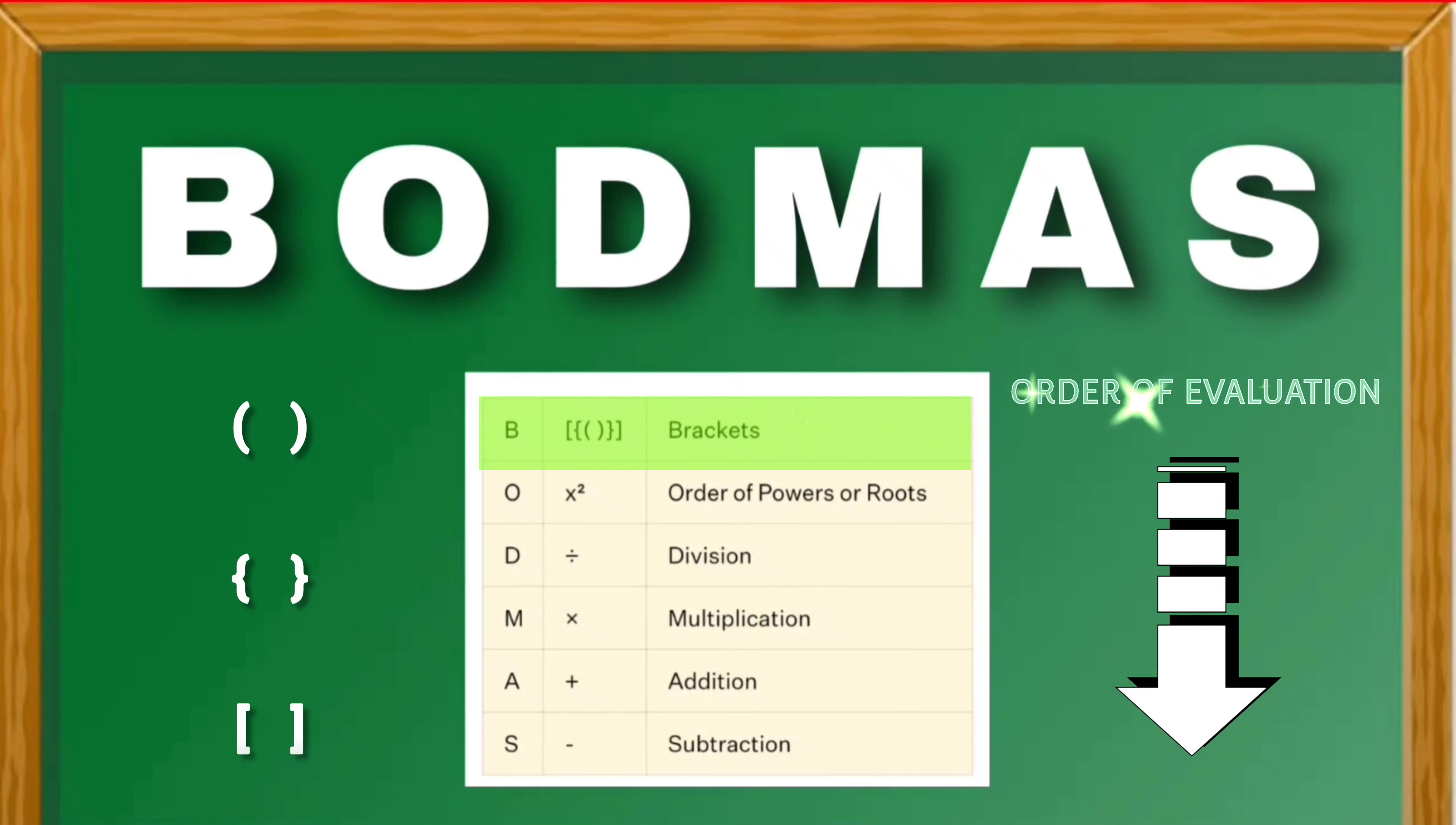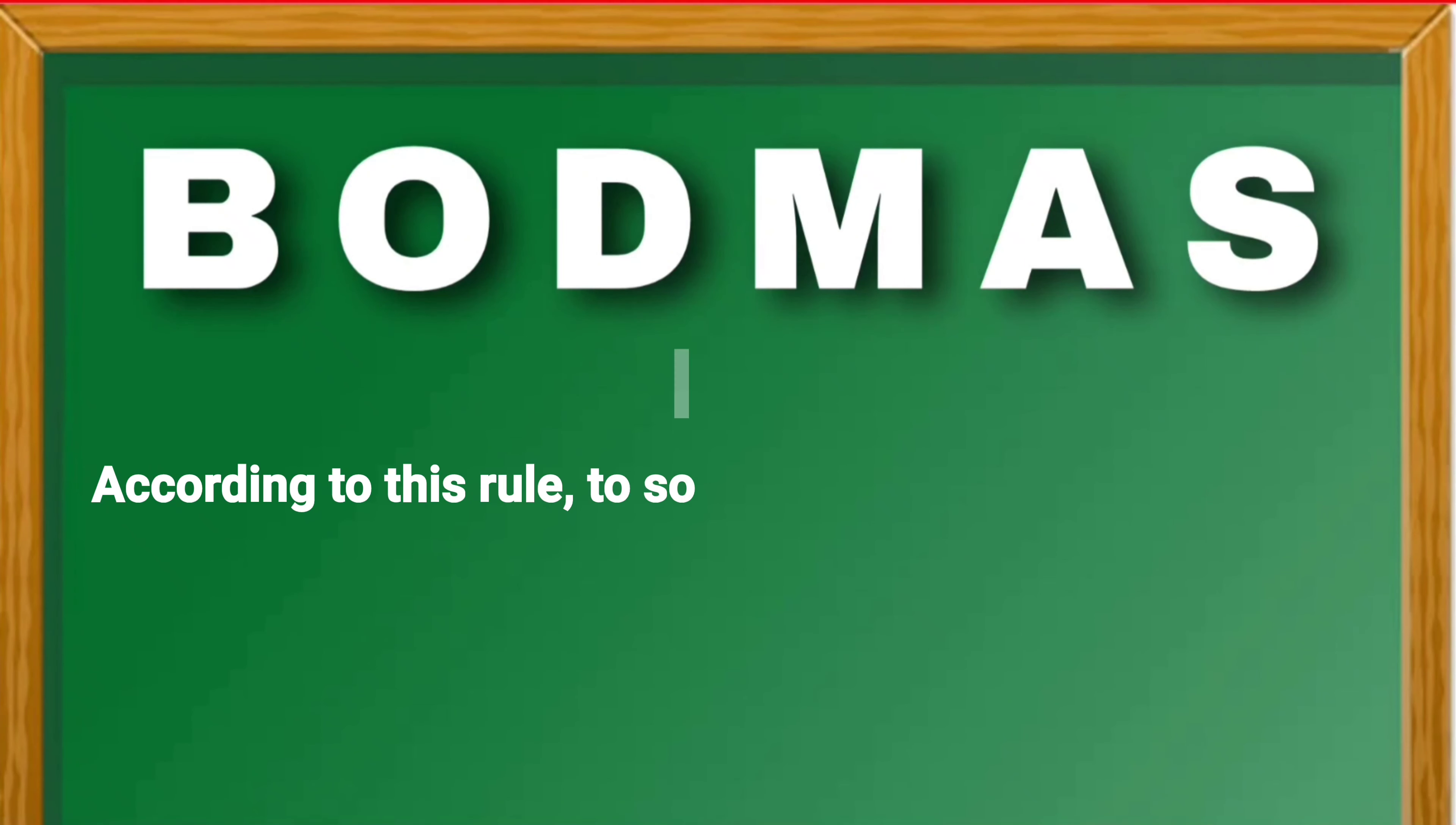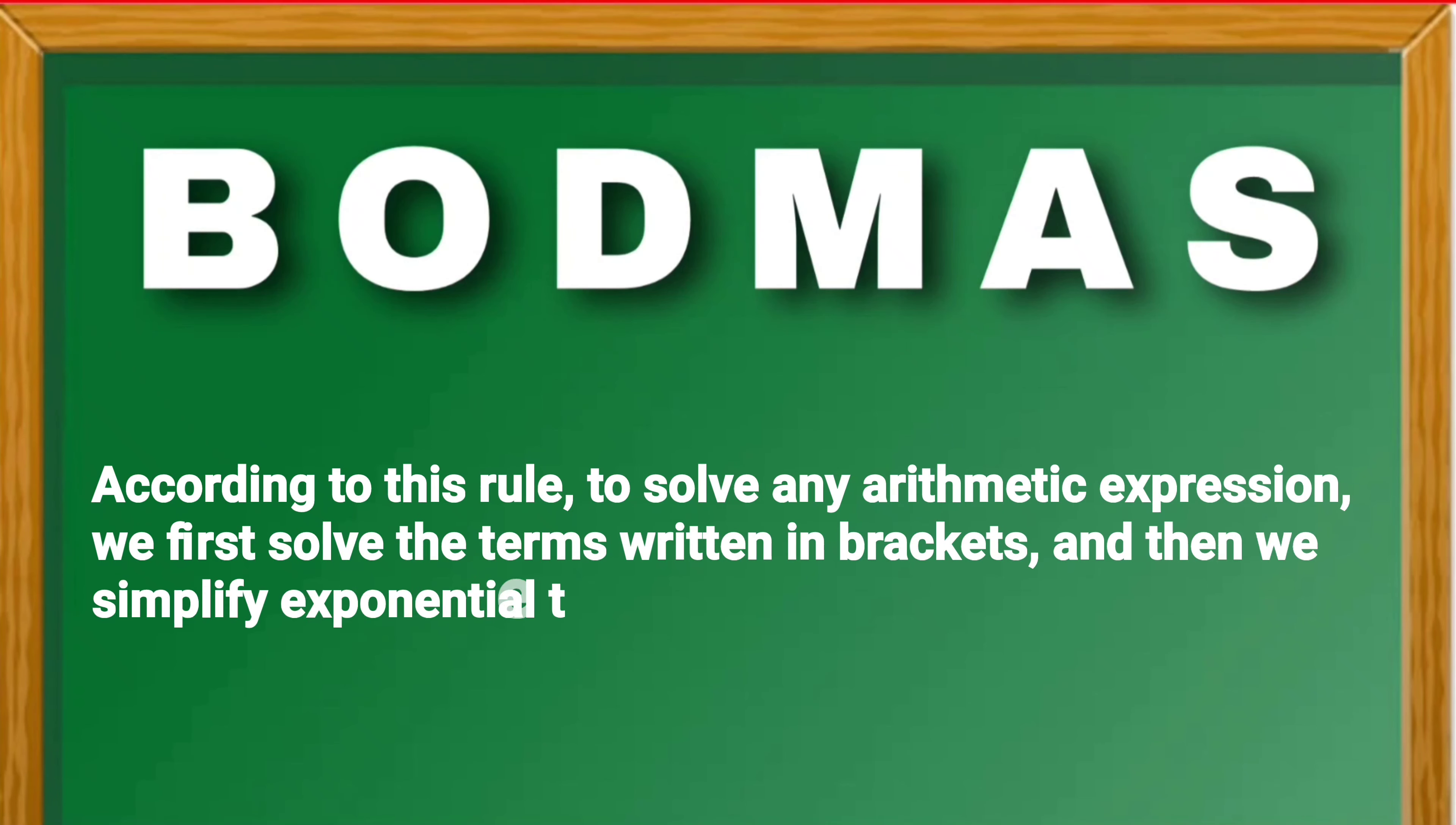Going to the brackets: first we need to execute the expression in the parenthesis, after that flower braces, after completion of the flower braces we need to solve the expression in square brackets. According to this rule, to solve any arithmetic expression, we first solve the terms written in brackets.